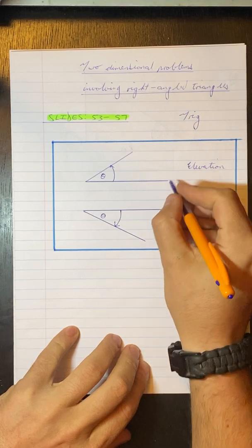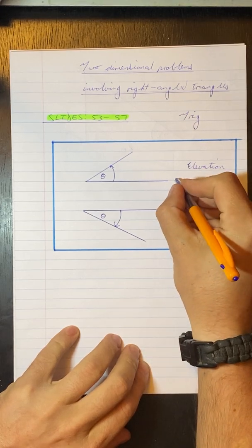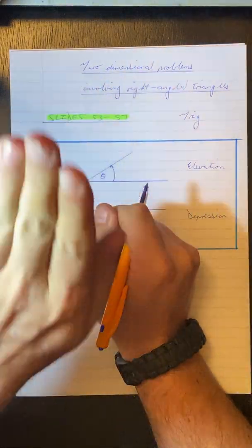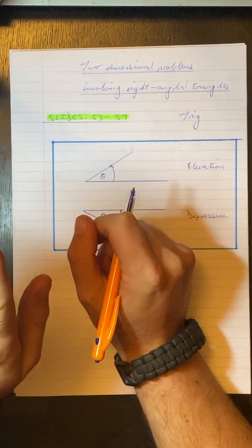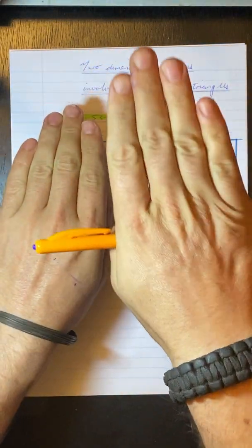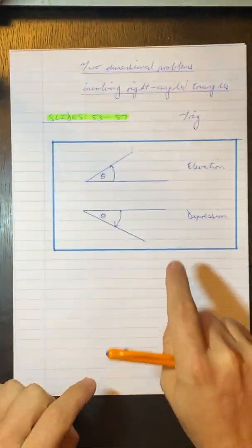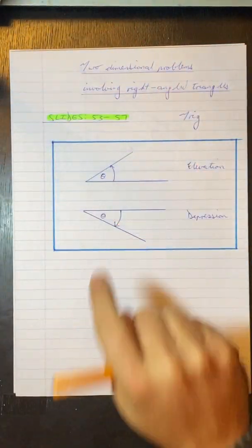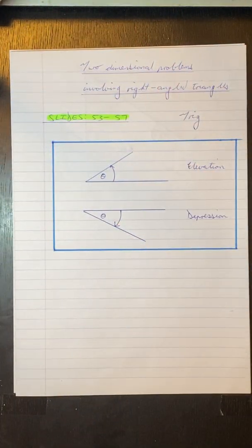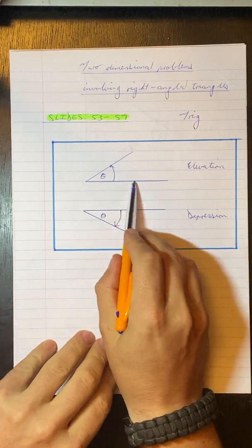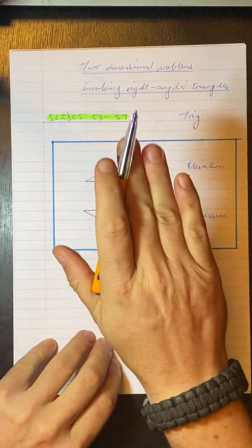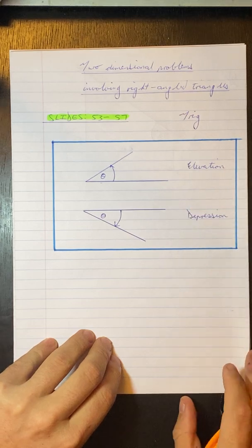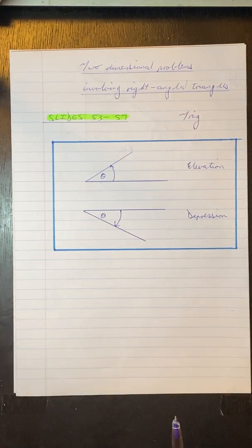Angle of elevation: if this is your eyeline, angle of elevation is if you look up. So you look straight ahead and then you look up. Angle of depression is if you're looking straight ahead, then you look down — that is your angle of depression. So it's always with the horizontal, either you're looking up or you're looking down. Elevation is up, depression is down.